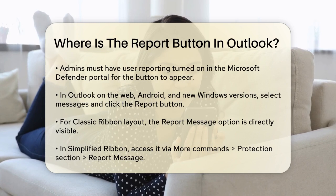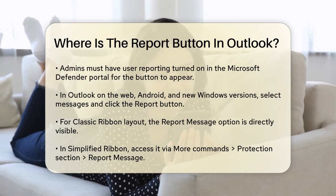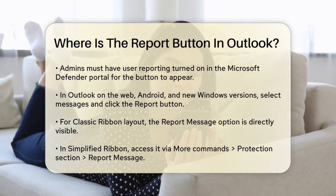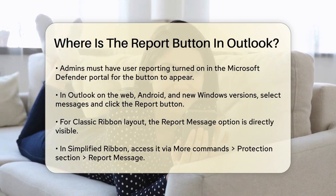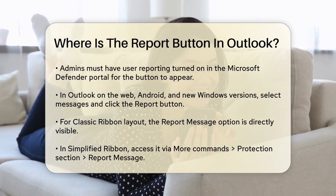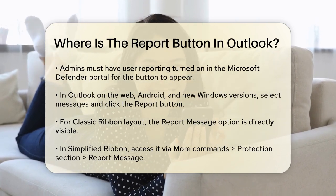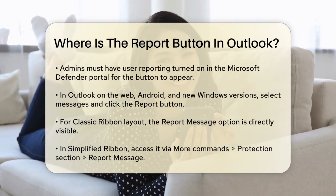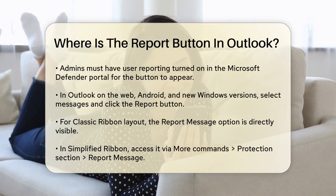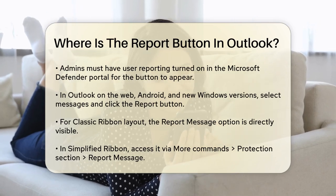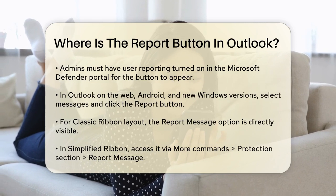Here's how you can find and use the Report button. In Outlook on the web, Outlook for Android, and the new Outlook for Windows, the Report button is usually found on the ribbon. You can select one or more messages, click on the Report button, and then choose whether to report the message as junk or phishing.